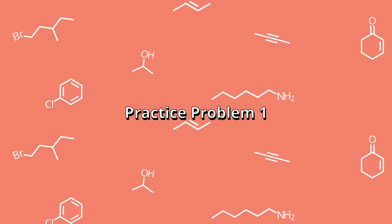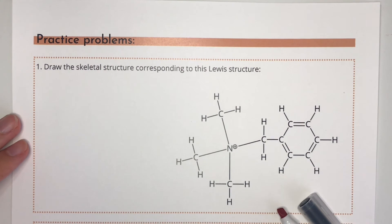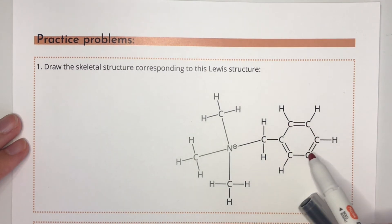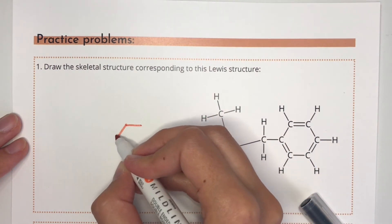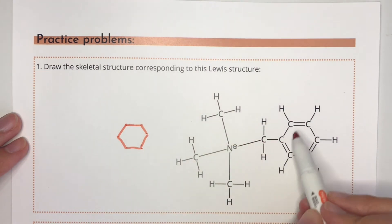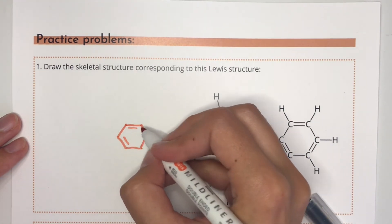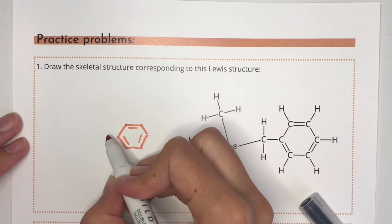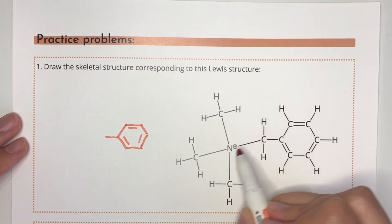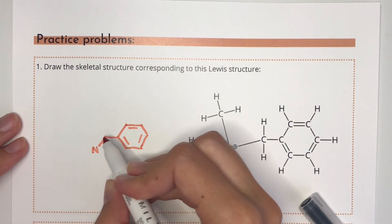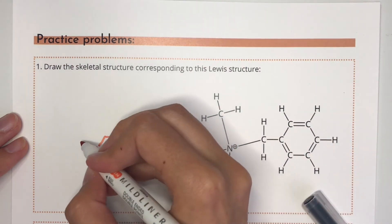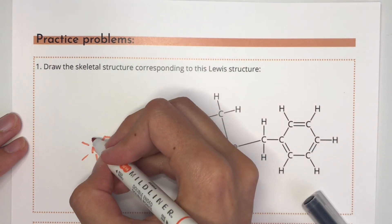Let's do a couple of practice problems to solidify what we've learned today. Feel free to pause the video if you want to do the problem before me, or just keep watching and do it along with me. Practice problem number one: draw the skeletal structure corresponding to this Lewis structure. We'll start with the six carbons that form the ring and leave all the hydrogens implicit, but we will draw in the three double bonds. Next we'll draw the single bond to the carbon off the ring — its hydrogens are implicit — and then a zigzag bond to the nitrogen atom. Finally, we draw single bonds to the three carbons off the nitrogen and leave off their hydrogens.